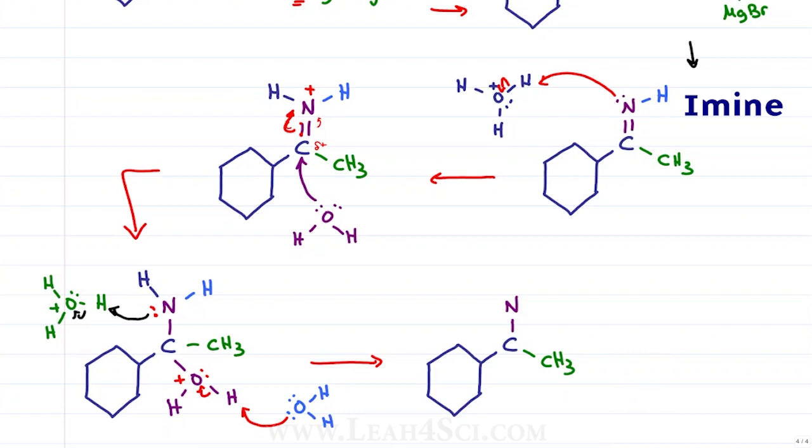Because nitrogen now has three protons, one from the first proton transfer, second proton transfer and the one it just grabbed in solution. Since it has four bonds and no electrons it gets a positive charge, meanwhile the oxygen has its initial lone pair along with the electrons that came from the bond between itself and hydrogen making it neutral.